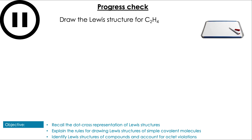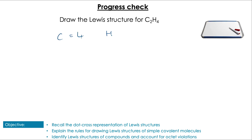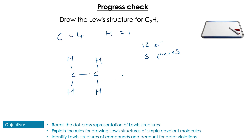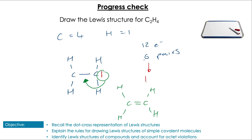Have a go at doing the same for C₂H₄ — pause the video and have a go. Totalling the electrons in the molecule gives us 12, or six pairs. We have two central carbon atoms, so we join them with one pair, then draw our four hydrogens around and join those — using five pairs altogether — leaving one remaining pair. Placing that on one carbon, it's clear the other carbon only has six electrons, so we move that lone pair into the middle, forming a double bond between the two carbon atoms.